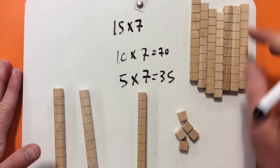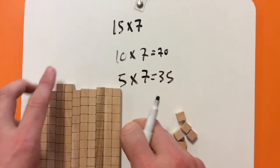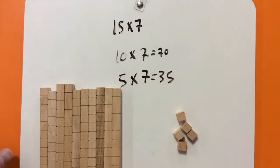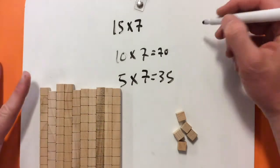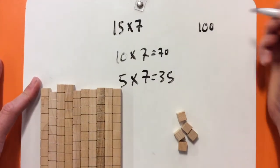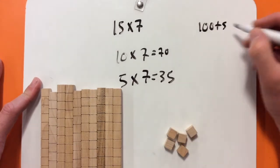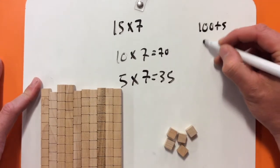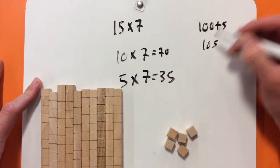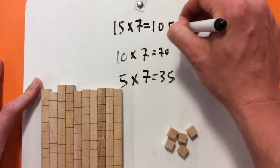Putting that all together, I've got my 70 and I've got 35, so I have 105. 15 times 7 equals 105.